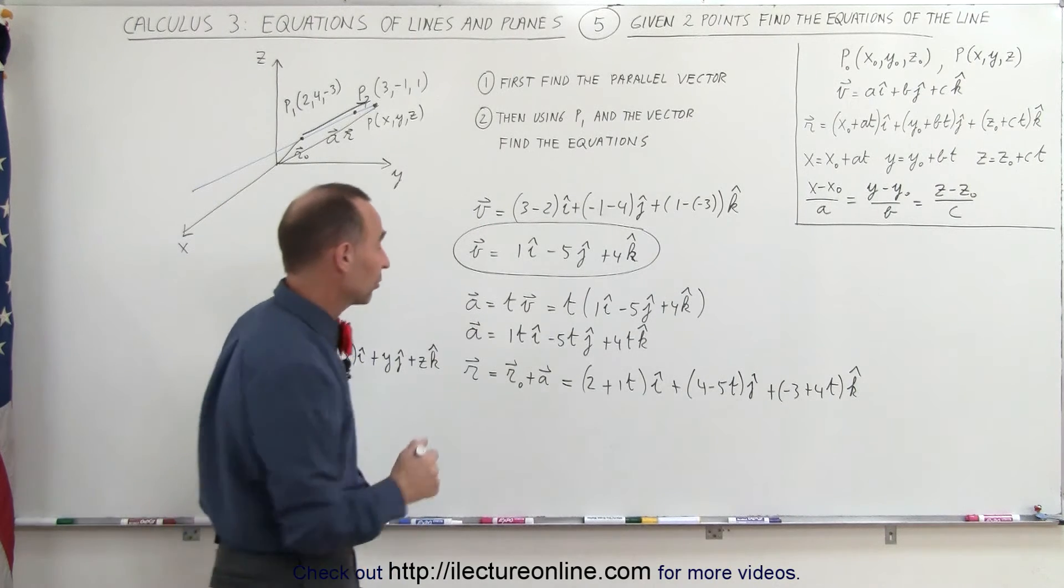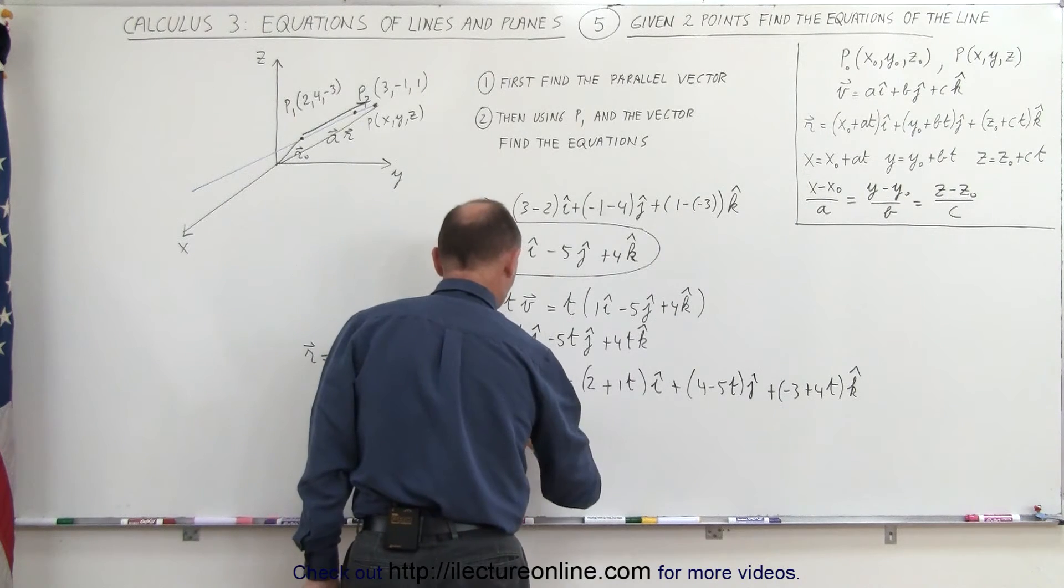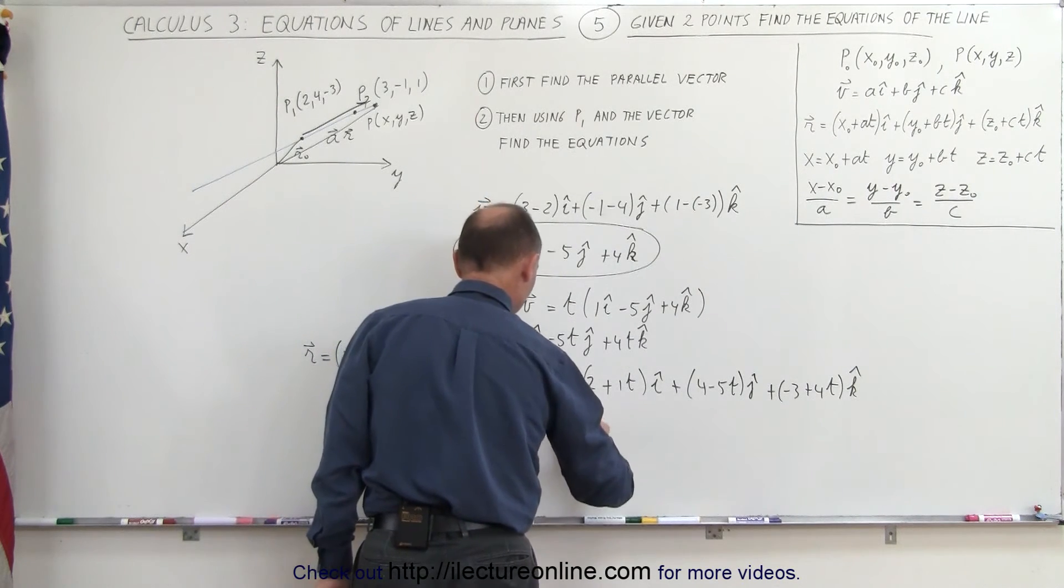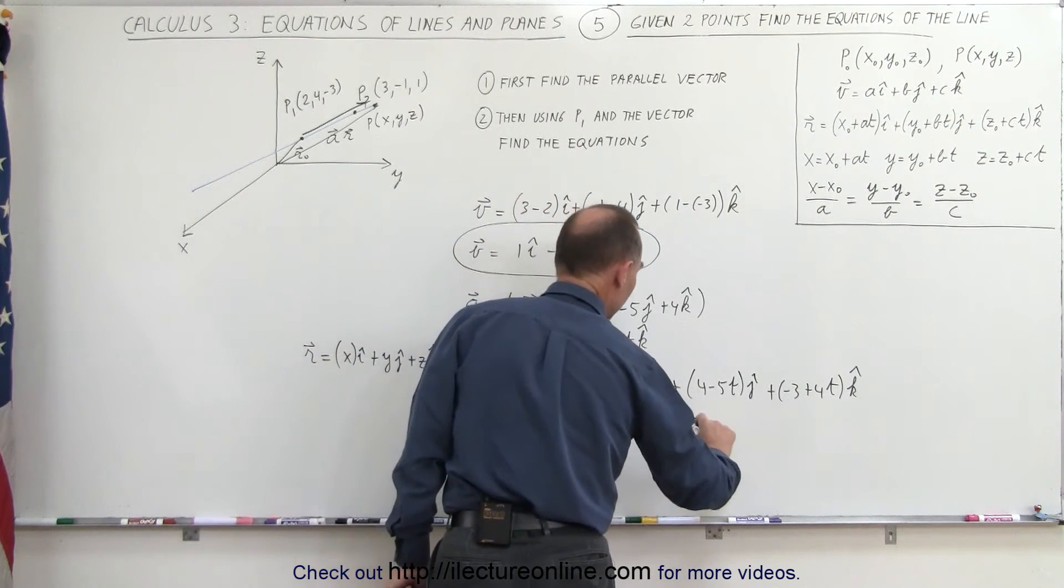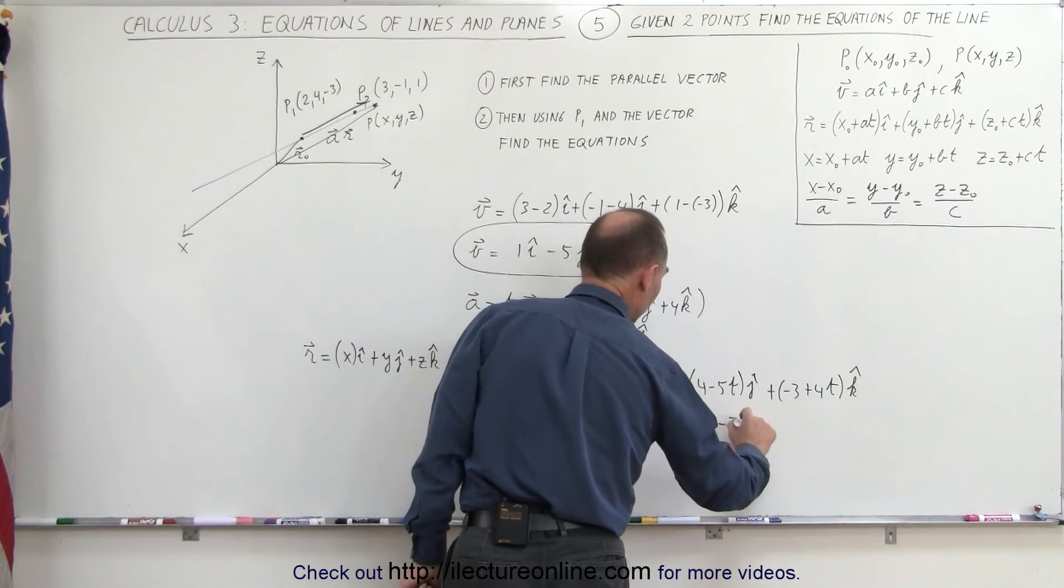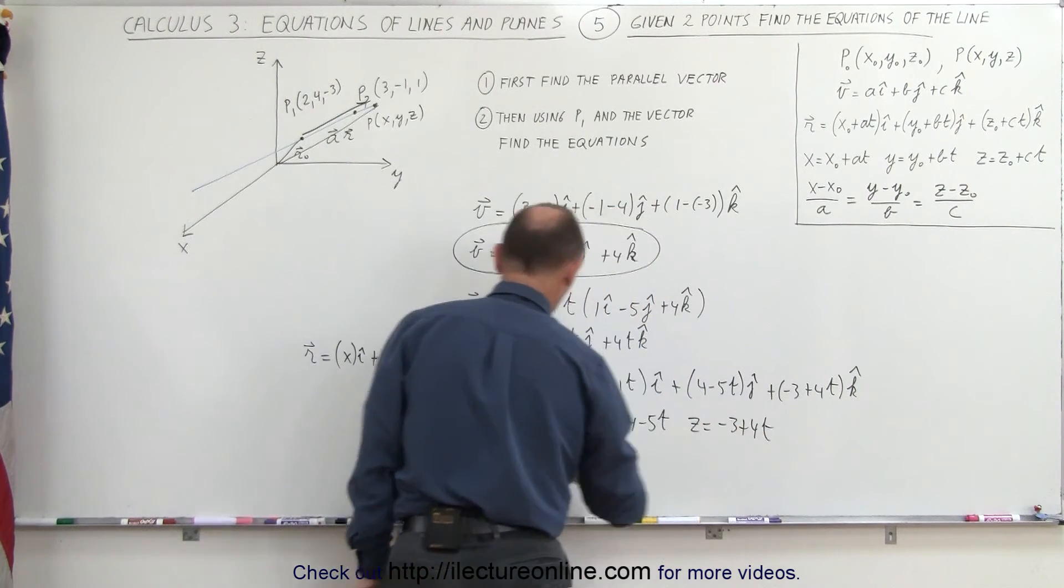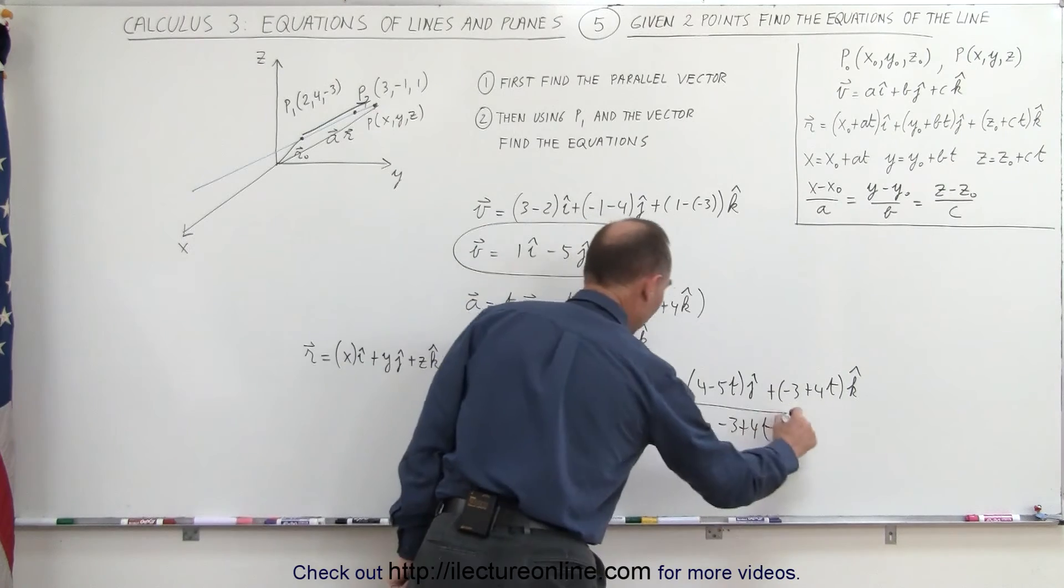We can now write that x is equal to 2 plus 1t, y is equal to 4 minus 5t, and z is equal to minus 3 plus 4t, the three parametric equations that describe that line.